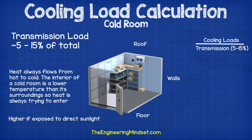So where does the heat come from that we need to remove? Well, typically 5 to 15 percent is through transmission loads. This is the thermal energy transferred through the roof, the walls and the floor into the cold room. Heat always flows from hot to cold, and the interior of the cold room is obviously a lot colder than its surroundings, so heat is always trying to enter the space. If the cold store is exposed to direct sunlight then the heat transfer will be higher, so an additional correction will need to be applied.